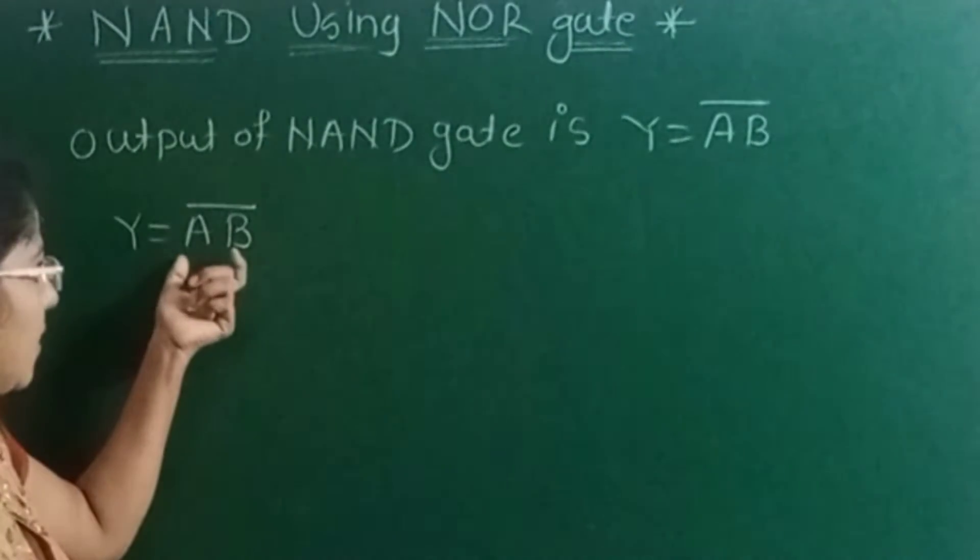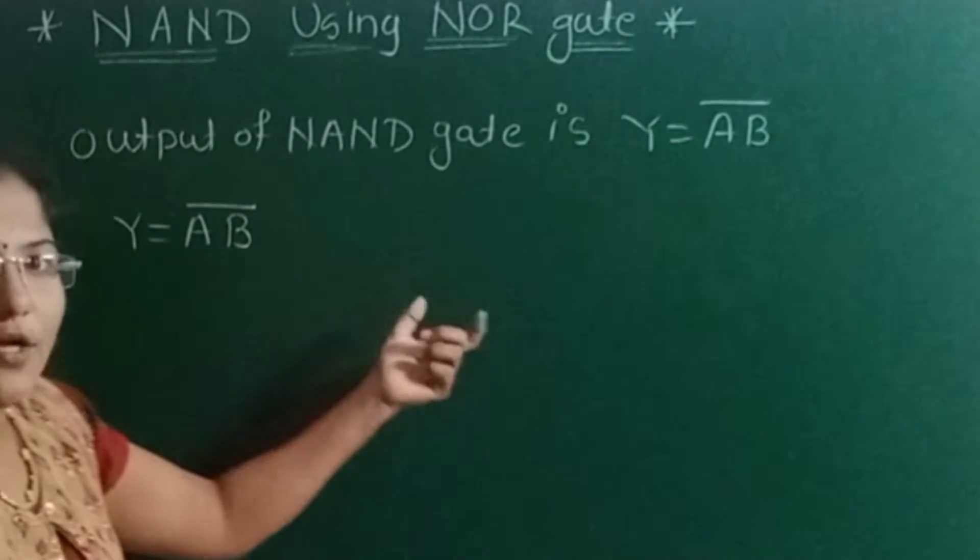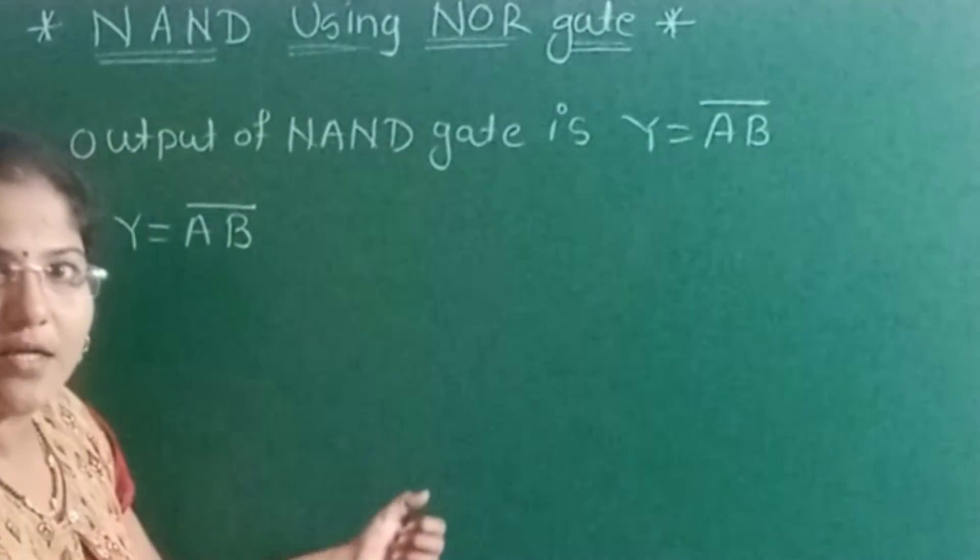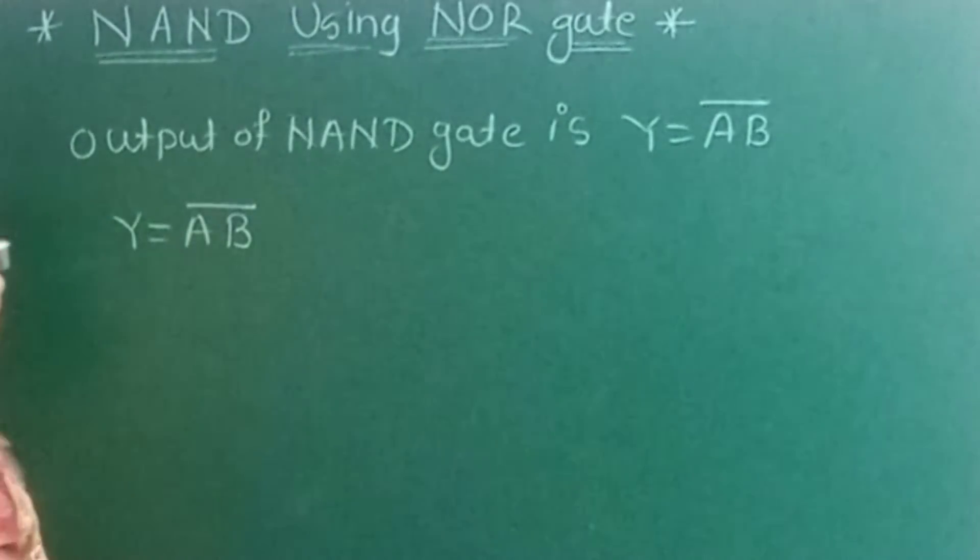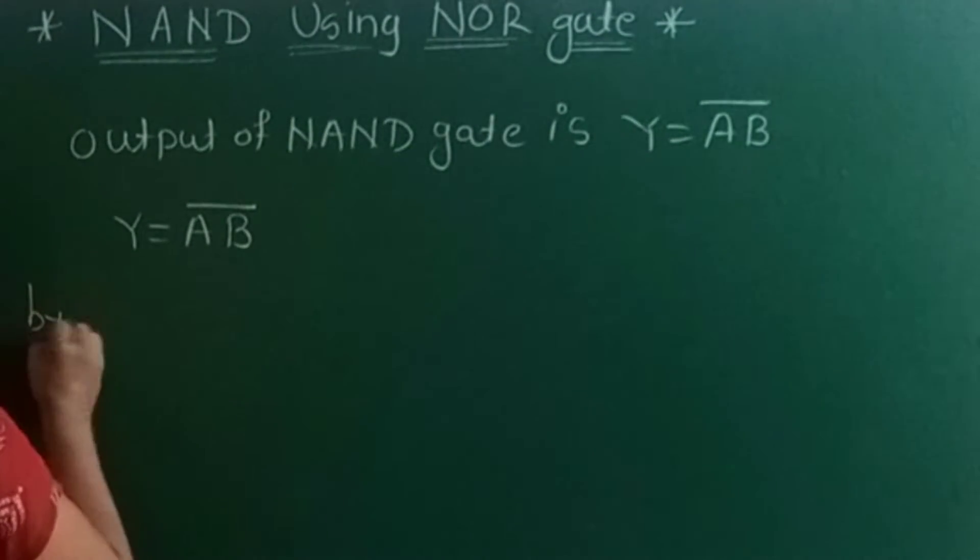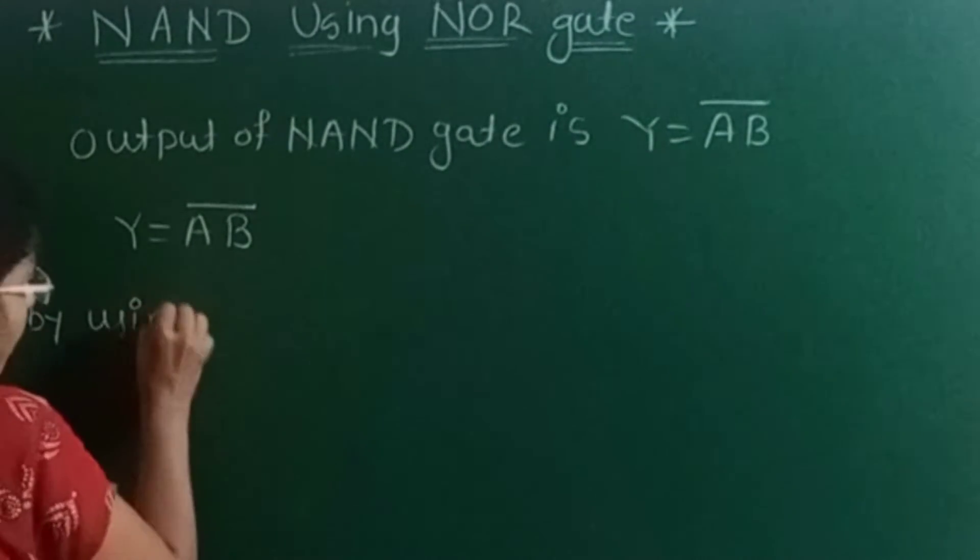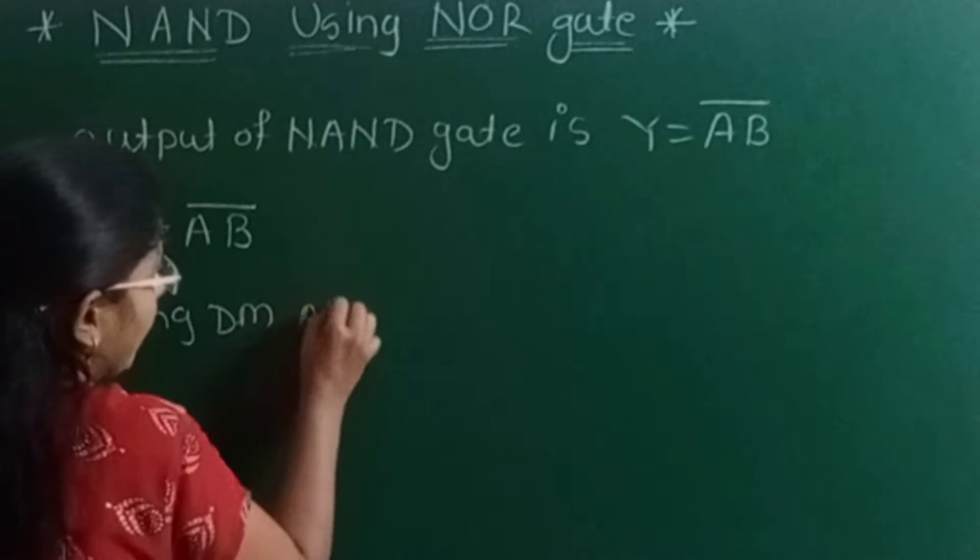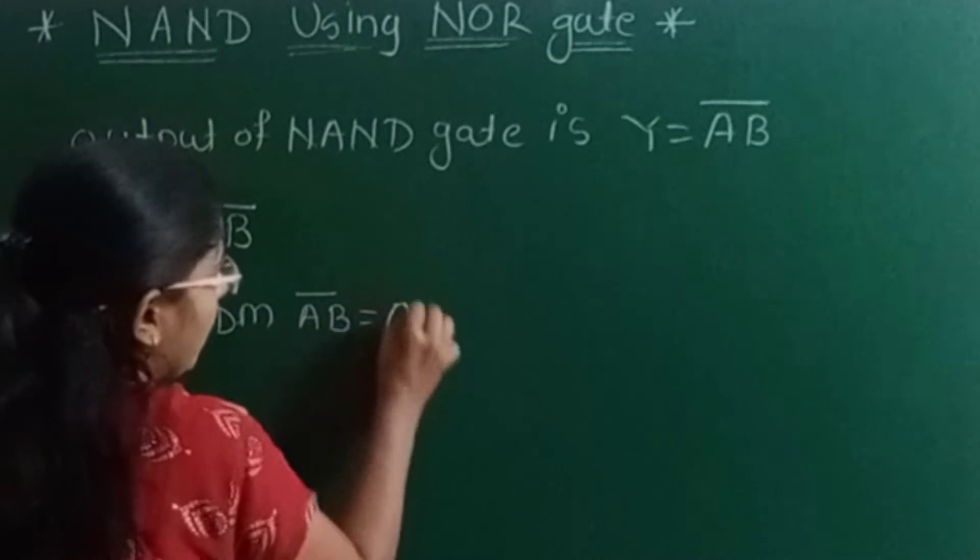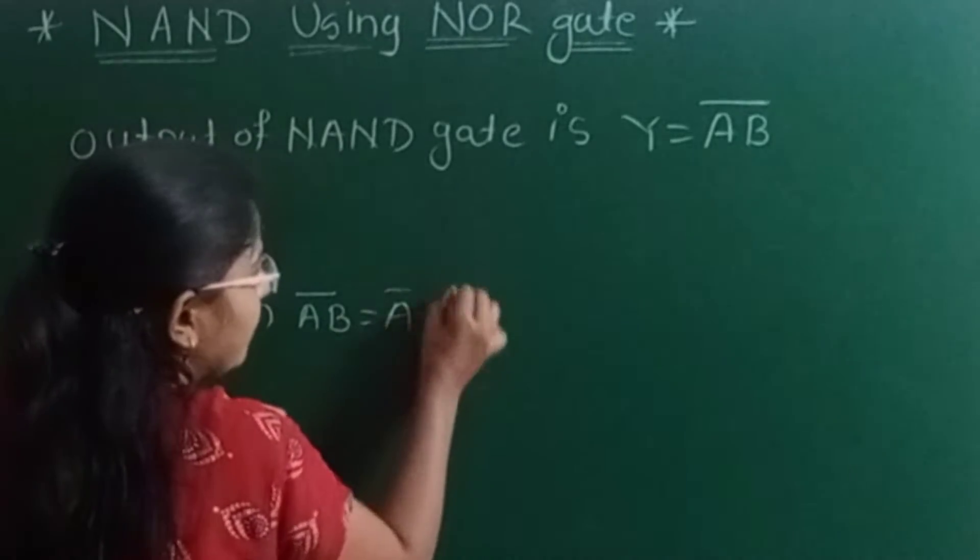By using De Morgan's theorem, we can write AB complement equal to A bar plus B bar. This is De Morgan's first theorem: AB complement is equal to A bar plus B bar.